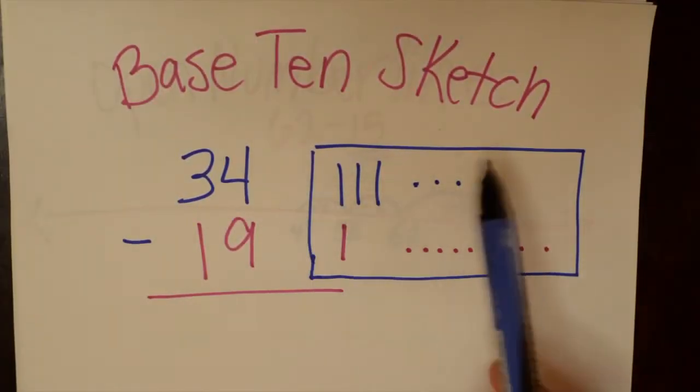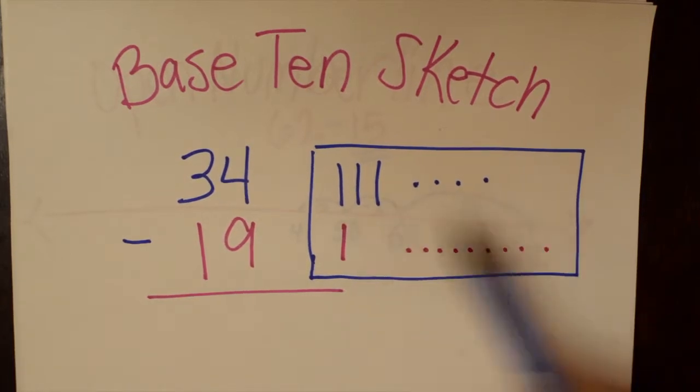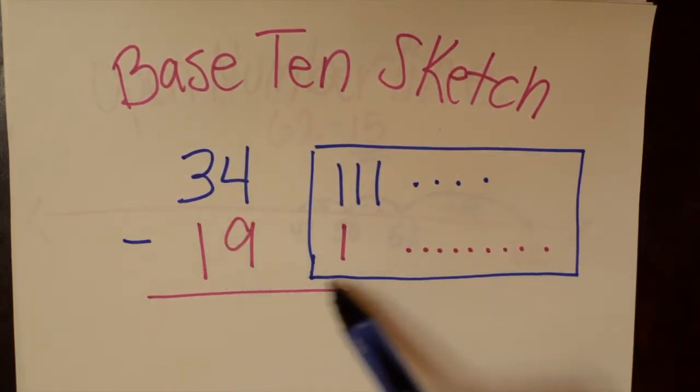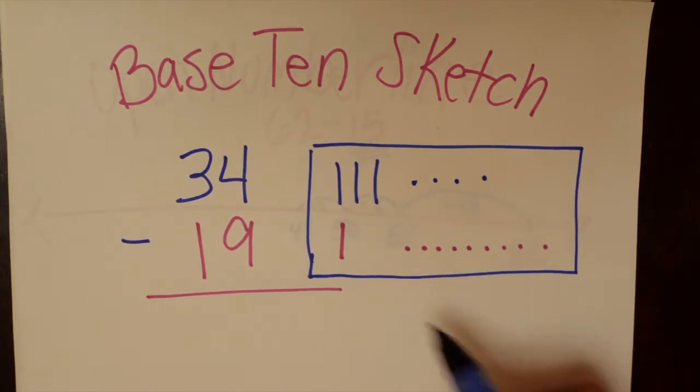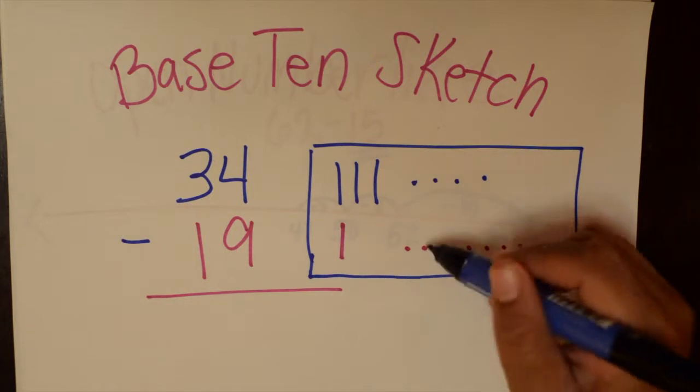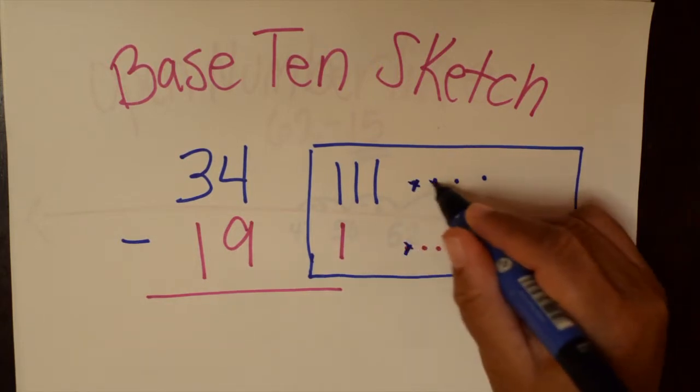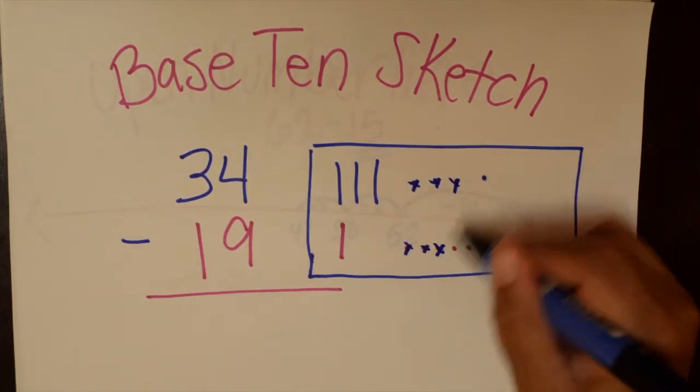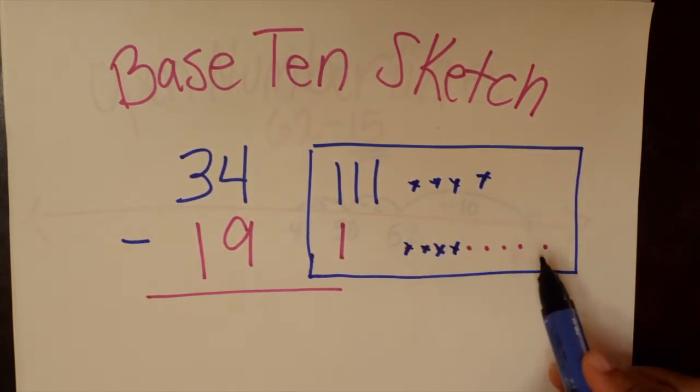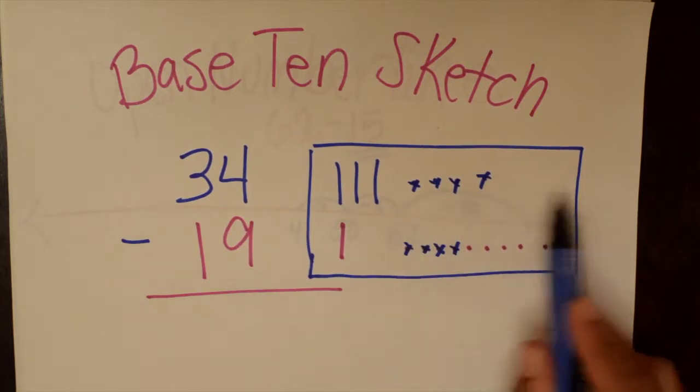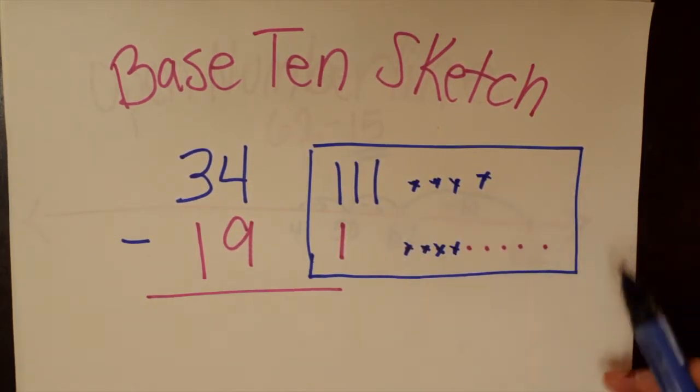The first strategy we're going to talk about is the base 10 sketch and this is where the kids are actually using drawings to show. So we have 34 minus 19. We have 34 sketched out, we have 19 sketched out. And what you want the kids to do is really just to match. So in terms of when you do it in two different colors and they can really see, okay, I'm going to have to regroup one of these because I don't have enough to keep marking out.